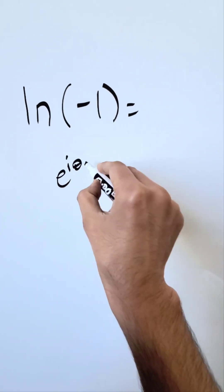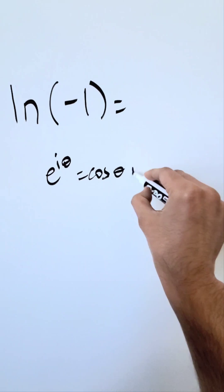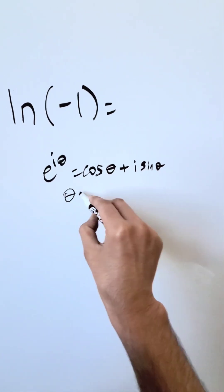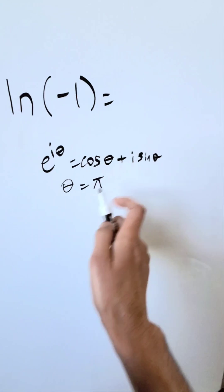E to the power of i theta is equal to cosine theta plus i sine theta. If you assume a value for theta to be pi, you have the Euler's identity come out.